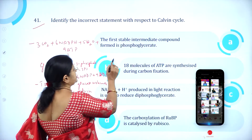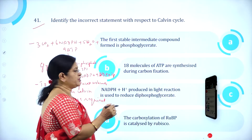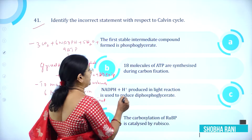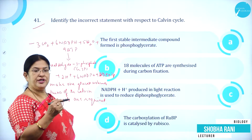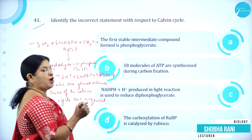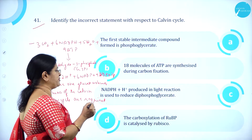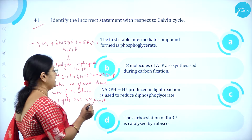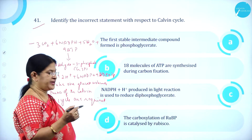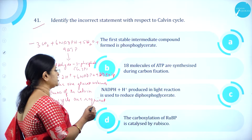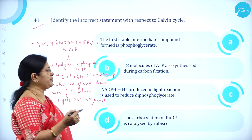Option A: the first stable intermediate compound formed is phosphoglycerate. Option B: 18 molecules of ATP are synthesized during carbon fixation. Option C: NADPH and H+ produced in light reaction is used to reduce diphosphoglycerate. Option D: the carboxylation of RuBP is catalyzed by Rubisco.